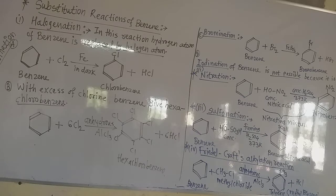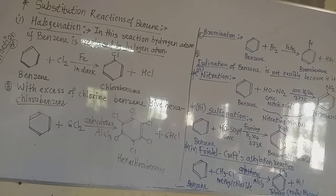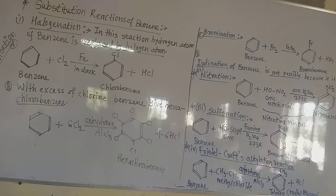Now let us see the first substitution reaction, that is halogenation. What is meant by halogenation? In this reaction, the hydrogen atom of benzene is replaced by a halogen atom such as chlorine, bromine, iodine, etc.